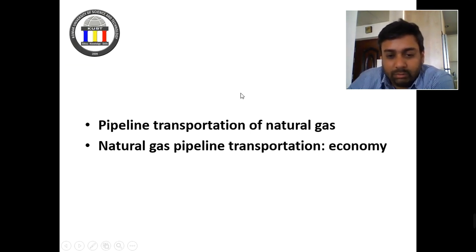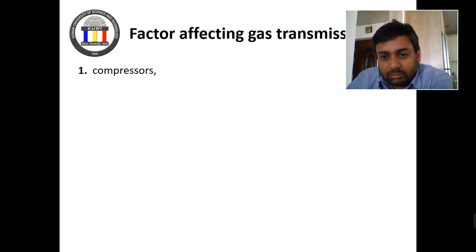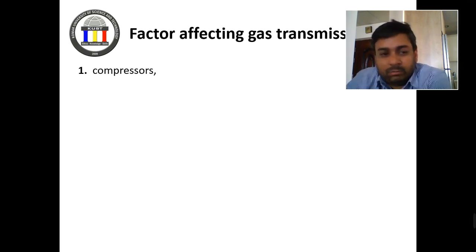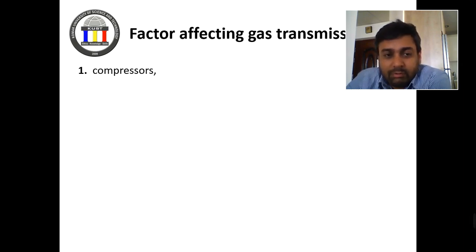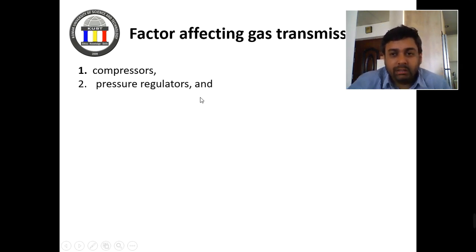First of all, when we were transporting oil we were using pumps to boost the pressures. The second thing we needed was knockout drums in order to take care of the pressure surges happening inside the pipeline. We also talked about various properties that can affect oil transmission in the pipeline.